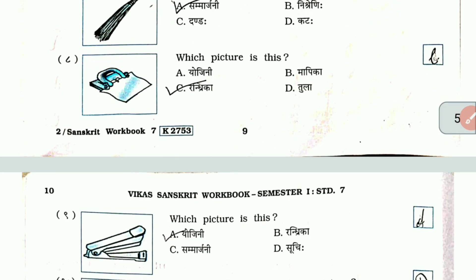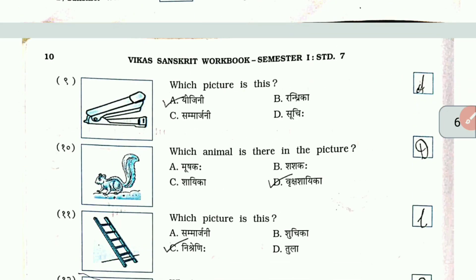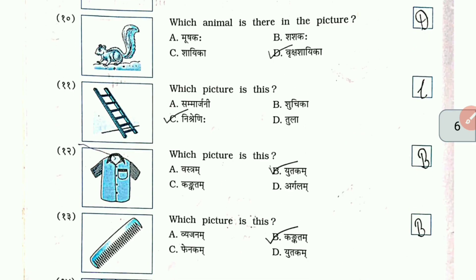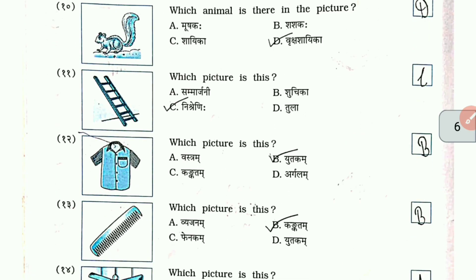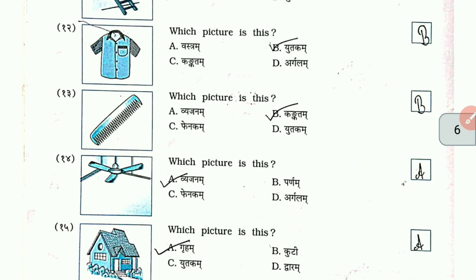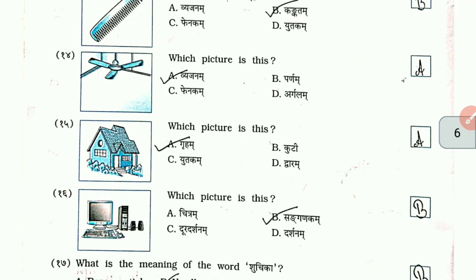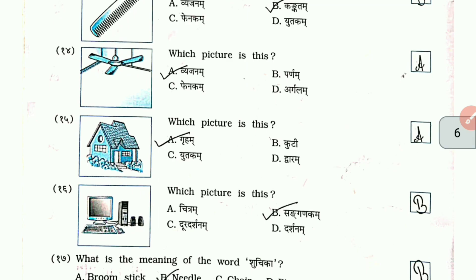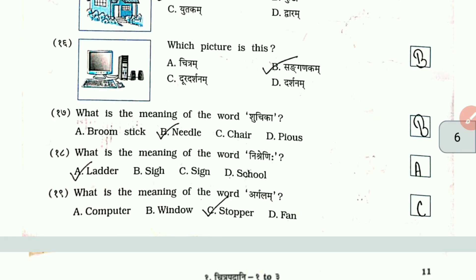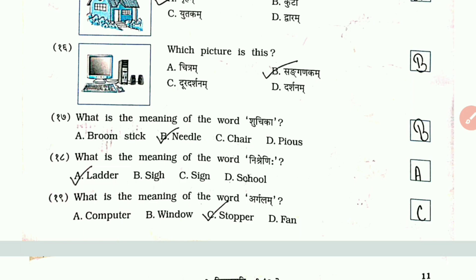Number 8: which picture is this? The answer is Randrika. Number 9: which picture is this? The answer is Eugeni. Number 10: which animal is there in the picture? Number 11: which picture is this? Number 12: which picture is this? Number 13: which picture is this? Number 14: which picture is this? Number 15: which picture is this? The answer is Griham. Number 16: which picture is this? The answer is Sangarcom.